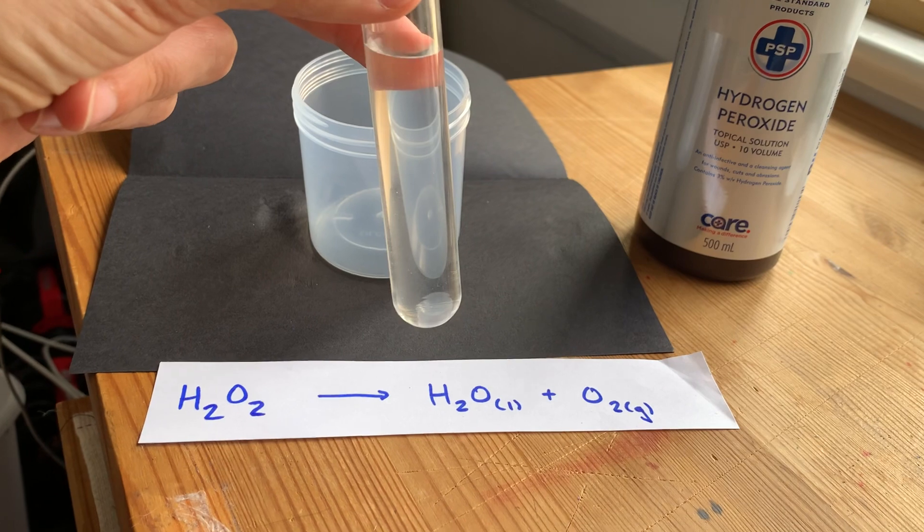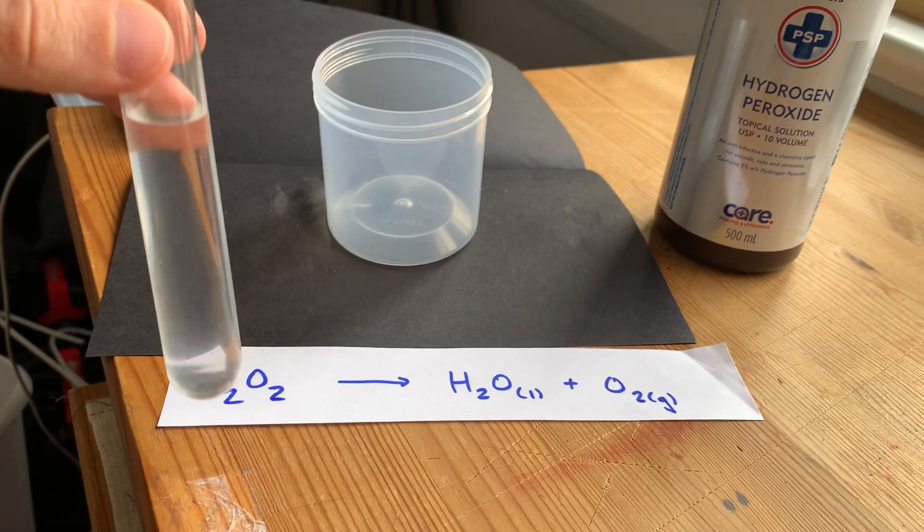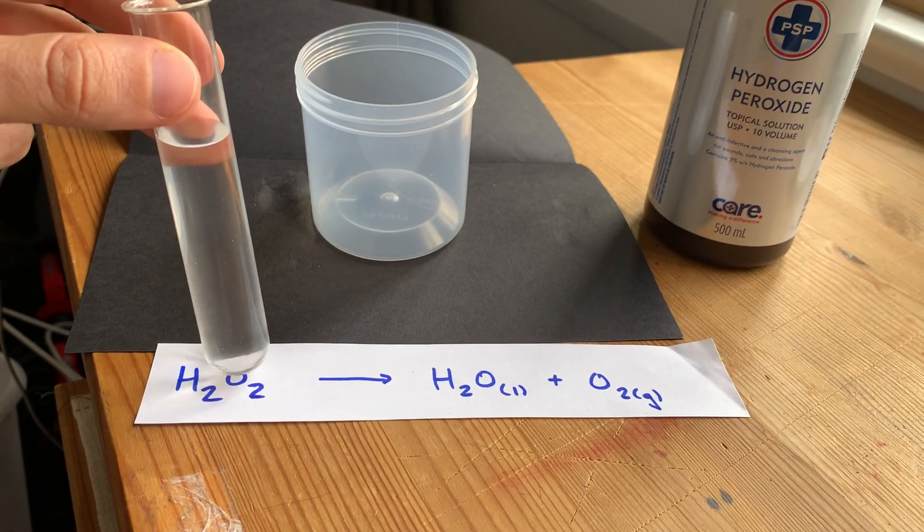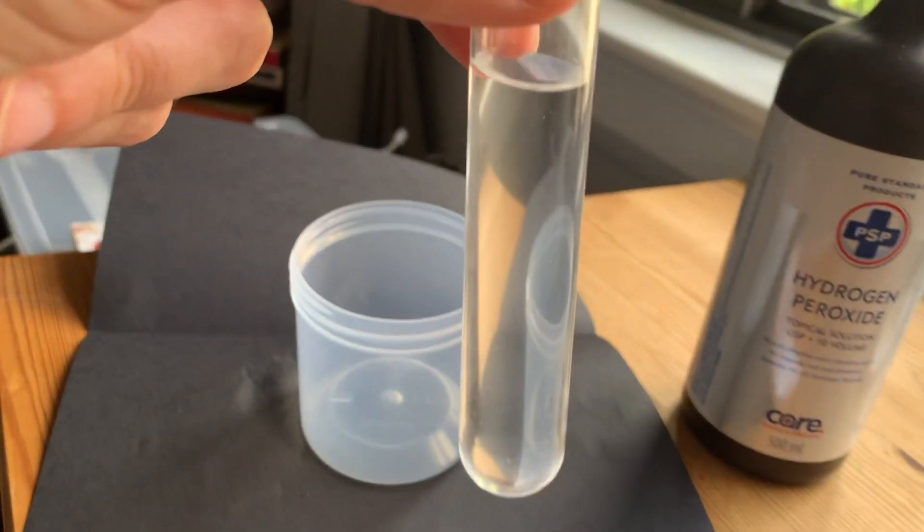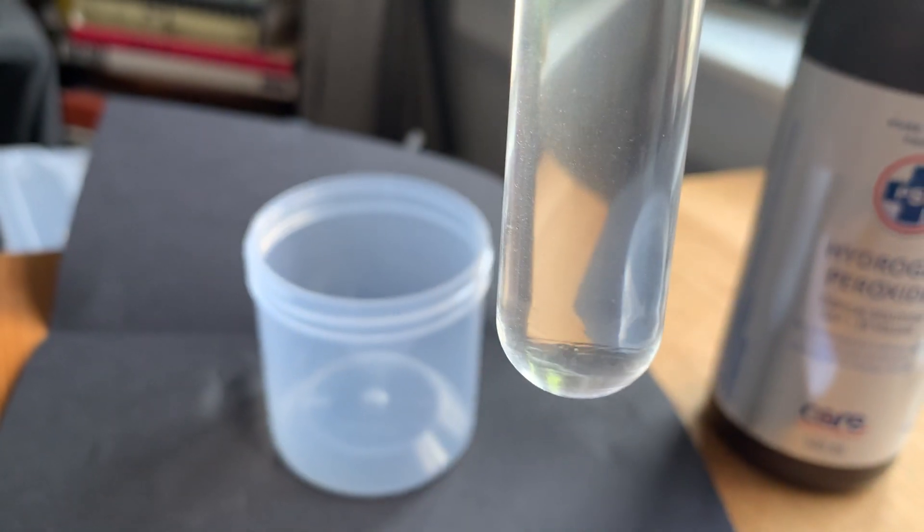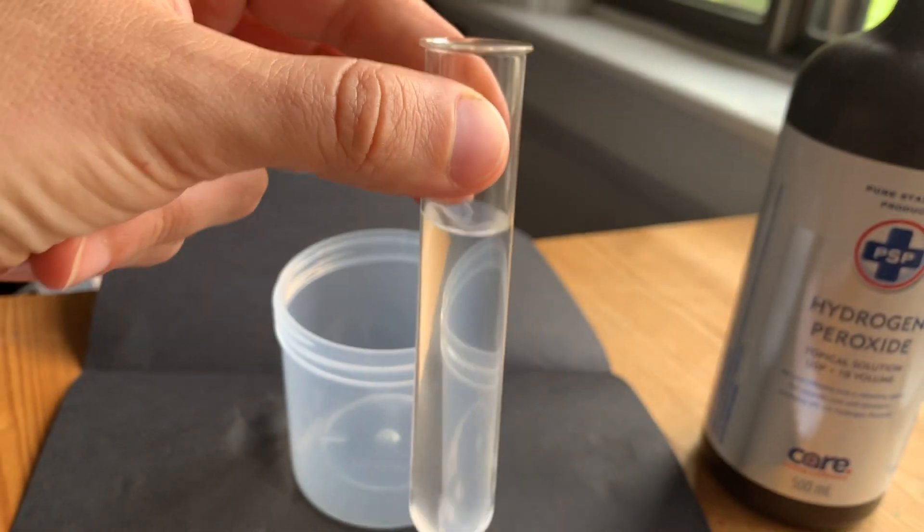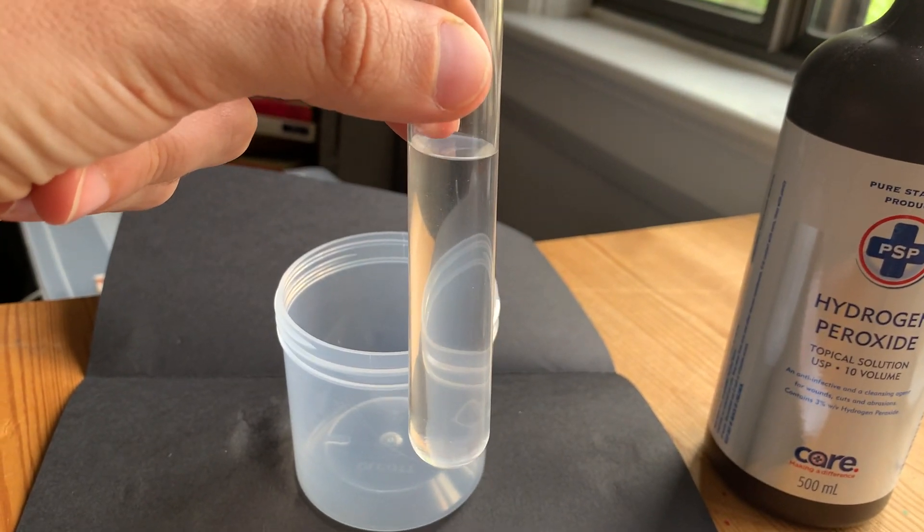Now, hydrogen peroxide does expire. That's because H2O2 will break apart on its own to become liquid water and oxygen gas. There's no bubbles in here because that process is actually very slow at room temperature, but there's a couple ways you can speed it up.